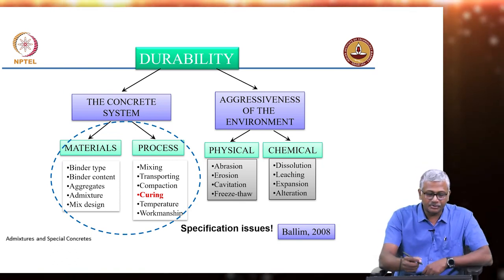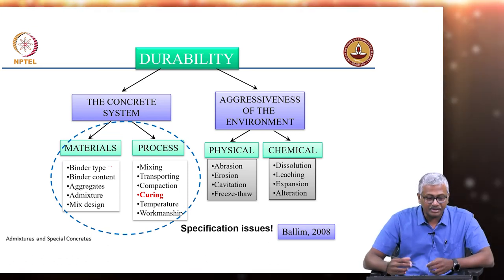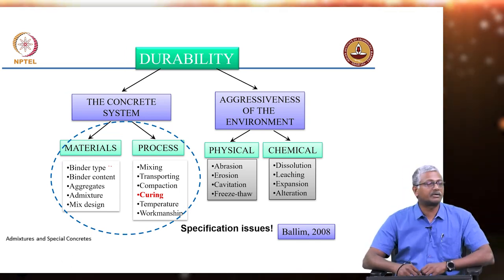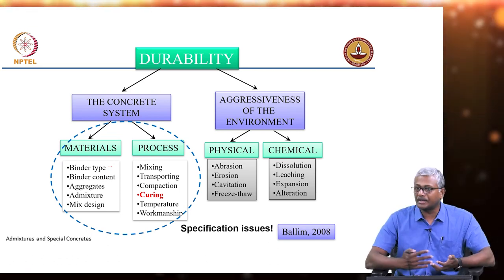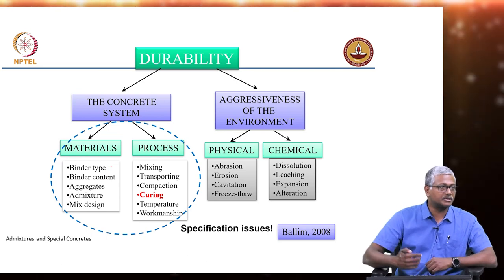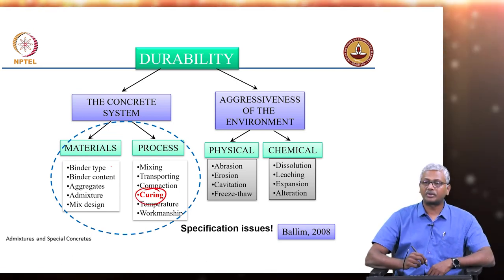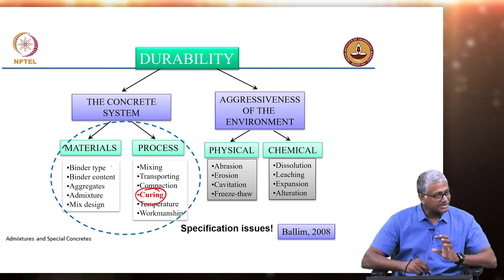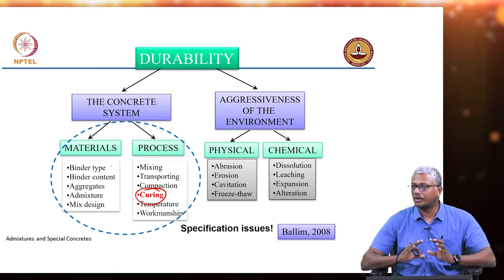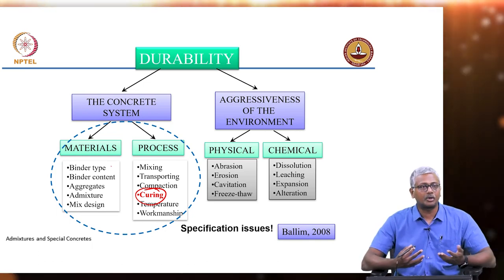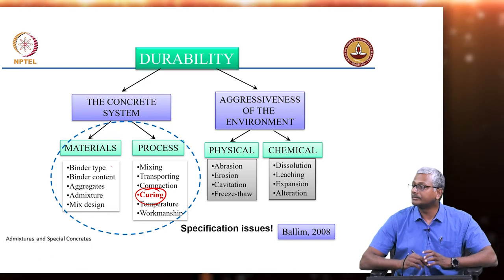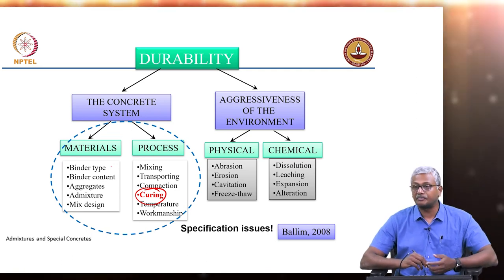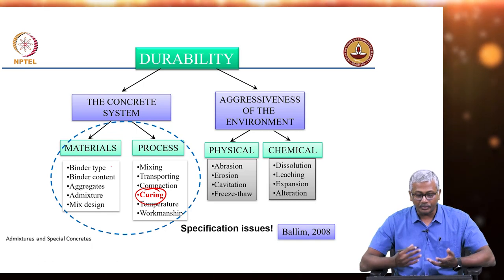The concrete system itself is composed of different types of binders, amount of binder, the aggregates that are used, admixtures, and mix design. But you also have the process of manufacturing the concrete or putting it in place inside a structure — that involves the entire process from mixing, transportation, compaction, and curing. Curing is absolutely an important strategy to ensure you are able to produce concrete of the right strength and durability inside the structure. There are other aspects that can also affect concreting, such as temperature and workmanship, but here our focus is on curing.